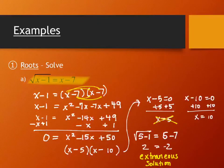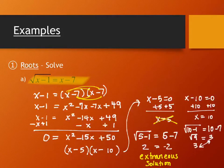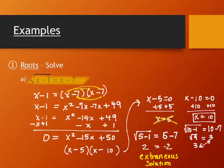We still need to check x equals 10. The square root of 10 minus 1 should equal 10 minus 7. That's the square root of 9, which is 3, and 10 minus 7 is also 3 — it checks out. So the actual solution is x equals 10, and x equals 5 is an extraneous solution. It's possible to have both, neither, or just one solution work, so you always need to check both.